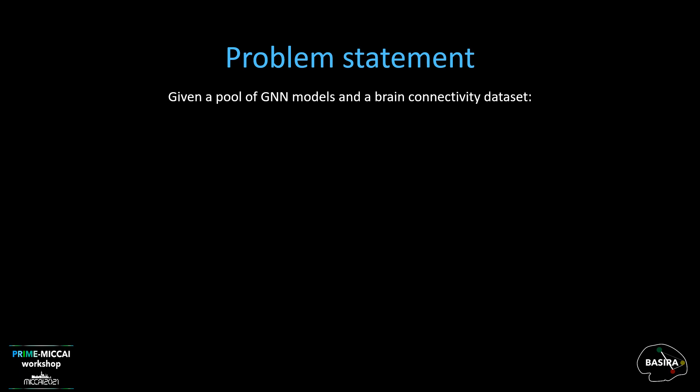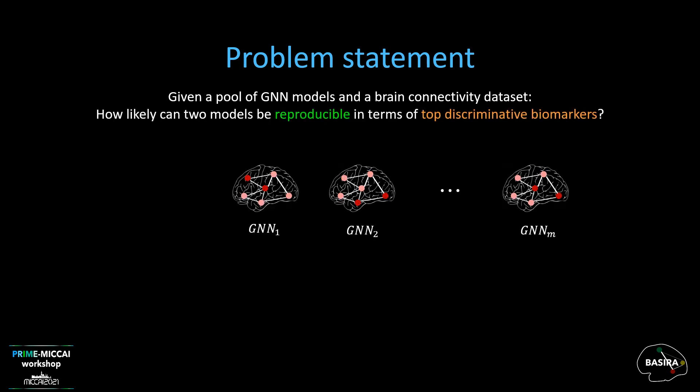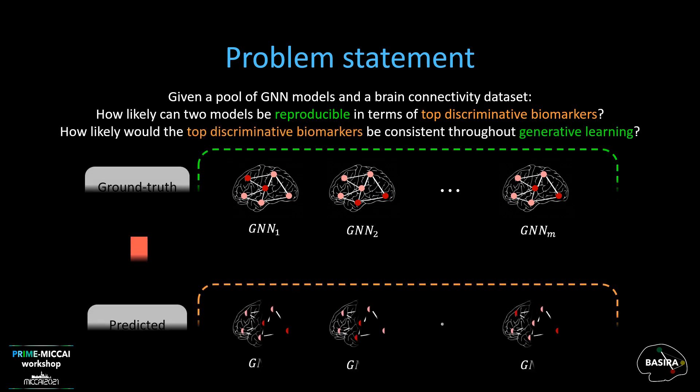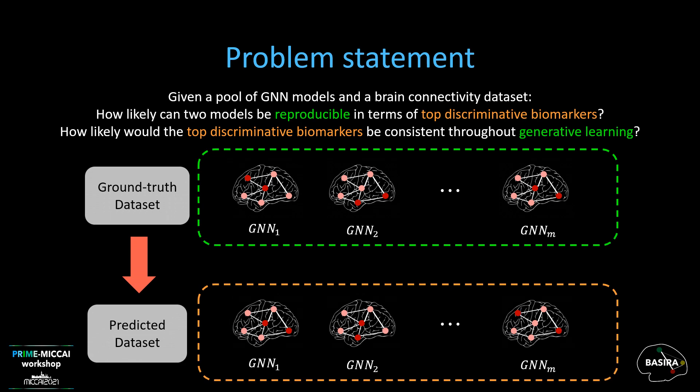Given a pool of GNN models and brain connectivity dataset, how likely can two models be reproducible in terms of their respective sets of top discriminative biomarkers? How likely would a set of top discriminative biomarkers by a trained model for a ground truth dataset be consistent with the predicted dataset by generative learning?